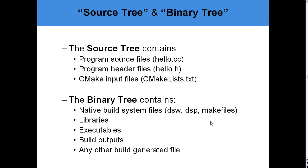Source tree and binary tree concepts: the source tree contains our source files and the CMake list files — basically the CMake project — and only that. The binary tree contains our native build system files like DSW, DSPs, SLNs, etc., as well as libraries, executables, build outputs, and any other build-generated files.